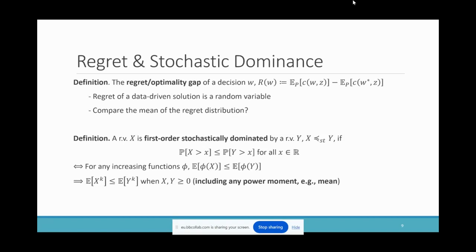We are able to do something much better: we use a type of stochastic ordering called first-order stochastic dominance to compare distributions. We say that X is first-order stochastically dominated by Y if any tail probability of X is less than that of Y. This is equivalent to the property that for any increasing function phi, the expectation of phi(X) is less than the expectation of phi(Y). When X and Y are both non-negative, it implies any moment of X is less than that of Y — a very strong comparison.